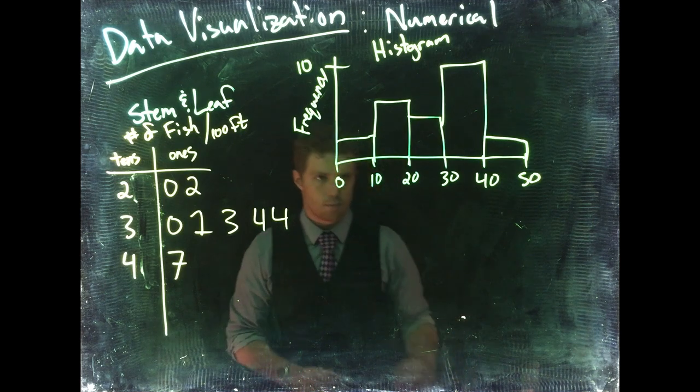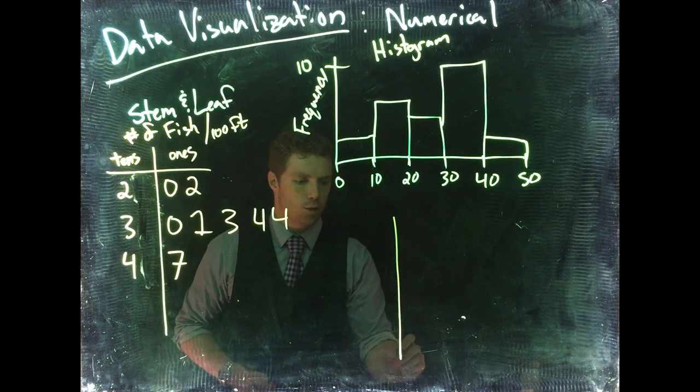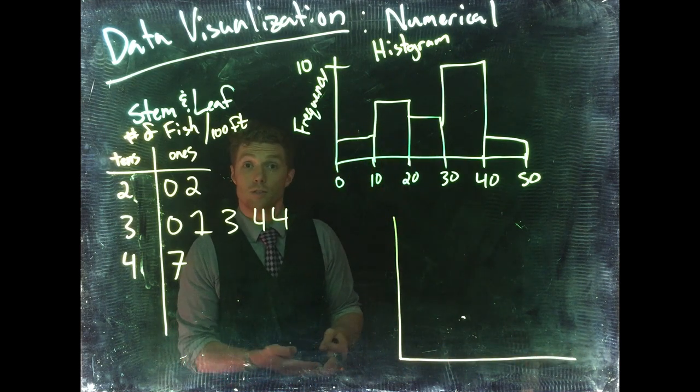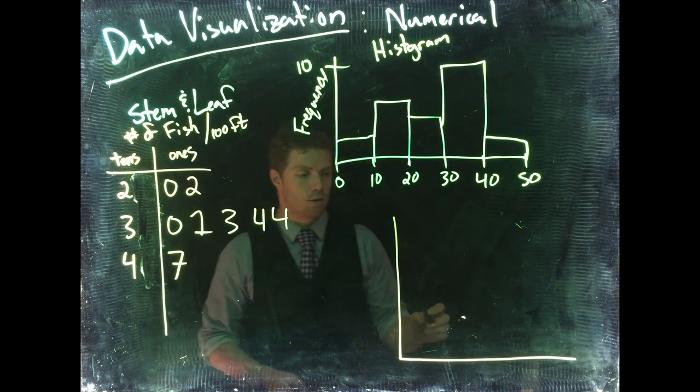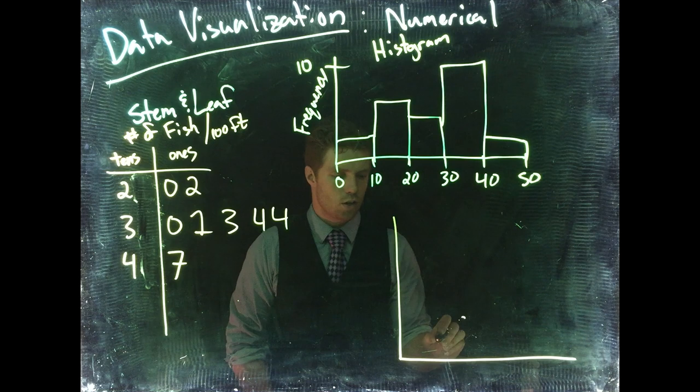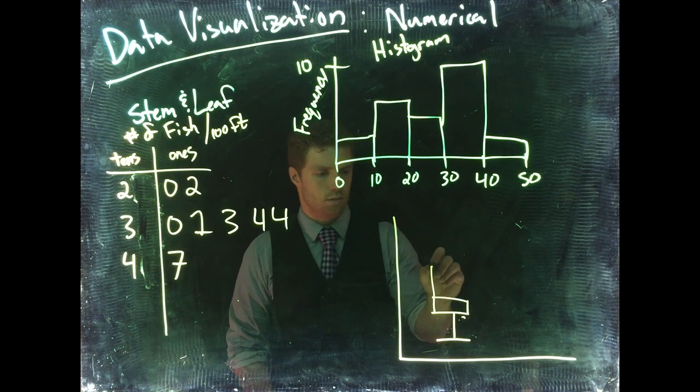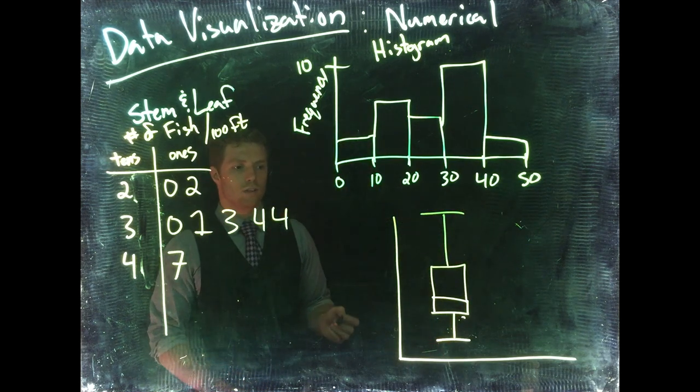Let's do one more—these are called box plots. Box plots are a quick way to summarize how our data looks. Sometimes they're done vertically, sometimes horizontally, but they're the same concept. We're going to work on them vertically. We start with our minimum, then we come up and do another box, and another box, and another line.